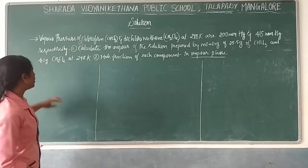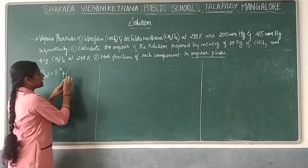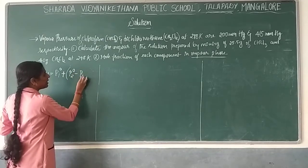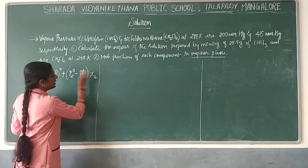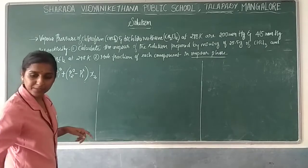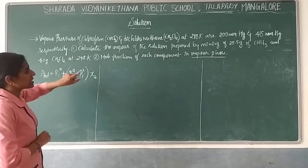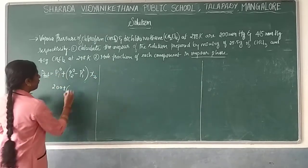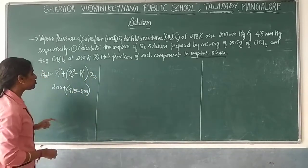First we will find out the vapor pressure of the solution. The formula goes like P_total = P1° + (P2° minus P1°) multiplied by X2. Since P2° is greater it comes first. Here P1° is the partial vapor pressure of the pure first component, which is 200 mmHg, and P2° is 450 mmHg. We need to find X2.